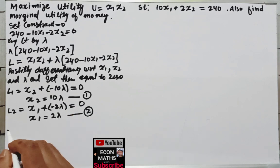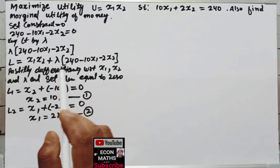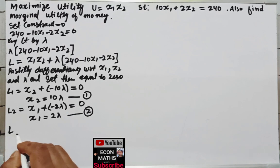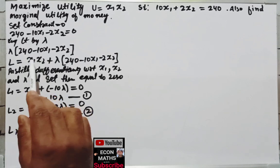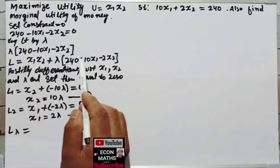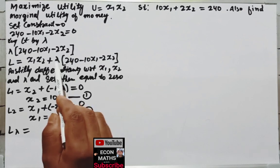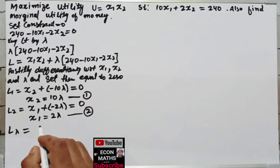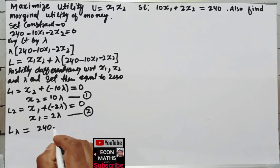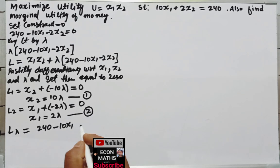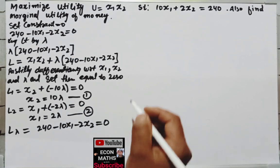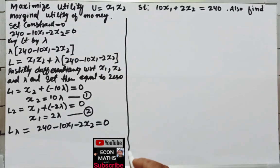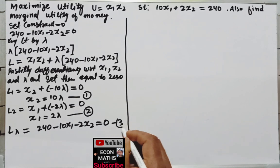Similarly, differentiating the Lagrange's function with respect to lambda: in the objective function part no lambda is involved so derivative is 0. The derivative of lambda is 1, so we get 240 minus 10x1 minus 2x2, set equal to 0. Let this be equation 3.